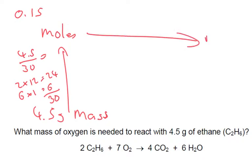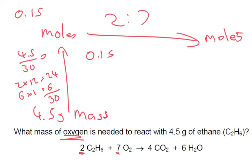Now I want to go over to moles on this side — we're looking for oxygen. The ratio is a bit of an odd one: it's 2 to 7. So 0.15 times by 7, divide by 2, and we get 0.525 moles.